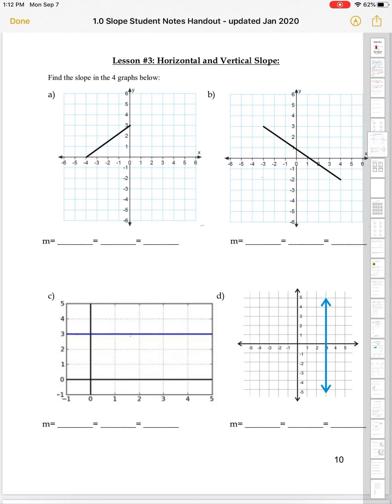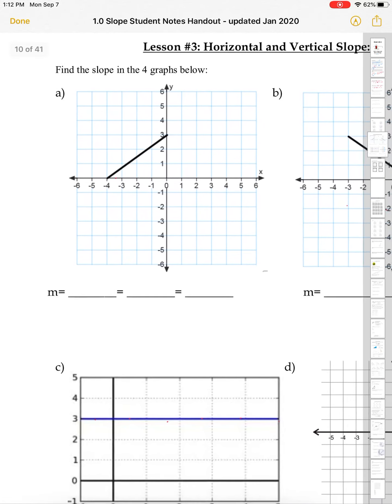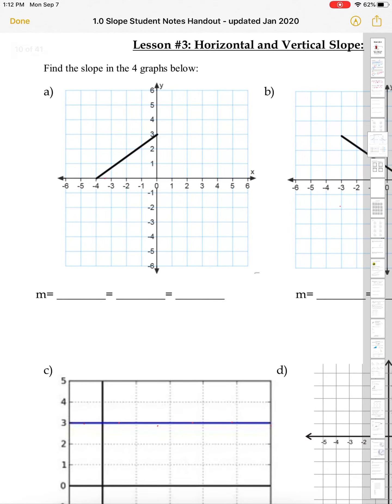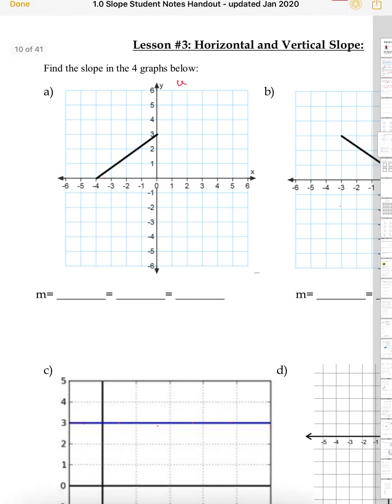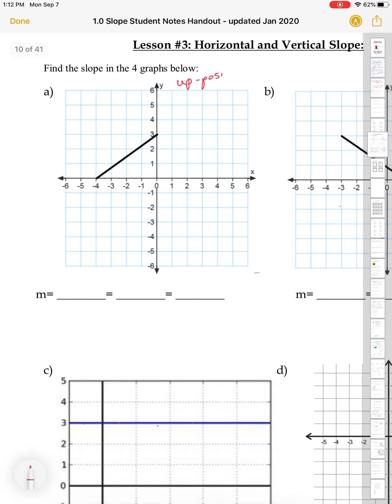Now, we're going to talk about horizontal and vertical slope. So this did seem familiar. We're looking at these four graphs. We're going to start by looking at this first one. Looking at that, it's going up. So it's a positive slope. We know that. And we're just going to calculate our rise and run. So our slope is our rise over run.